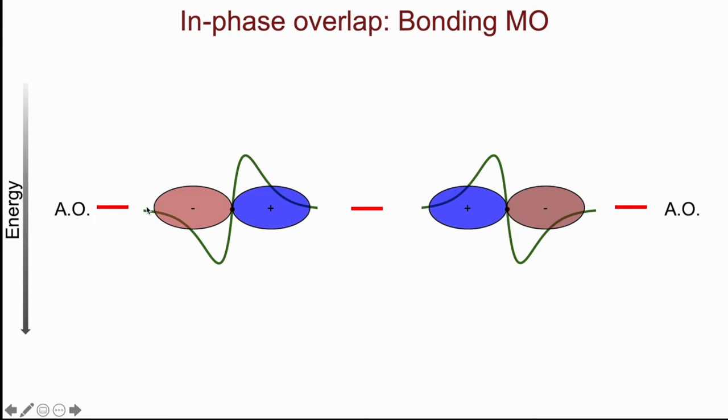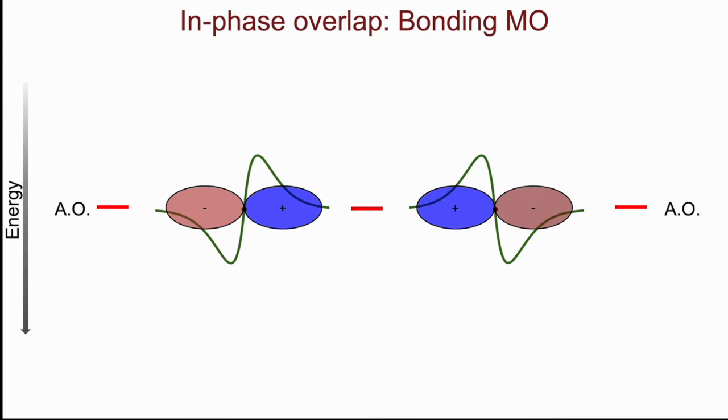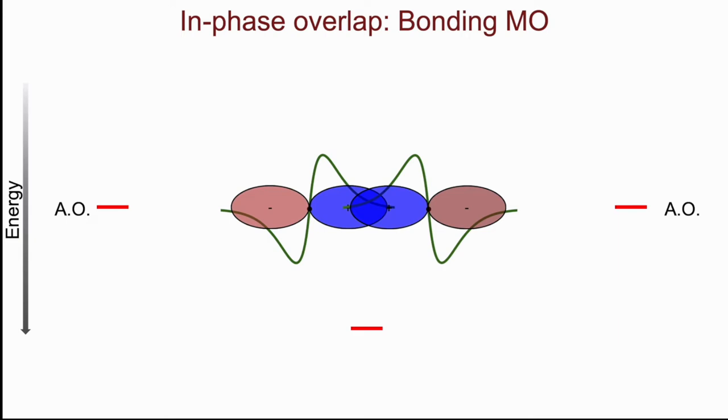And here I have shown the actual wave function. So this is the p wave function, the 2p wave function, showing that in this region the wave function has a positive amplitude, and on the other side of the nucleus we have a negative amplitude. Now as they approach each other, and in this case I am just drawing the overlap of similar phases between the atoms, here I get constructive interference.